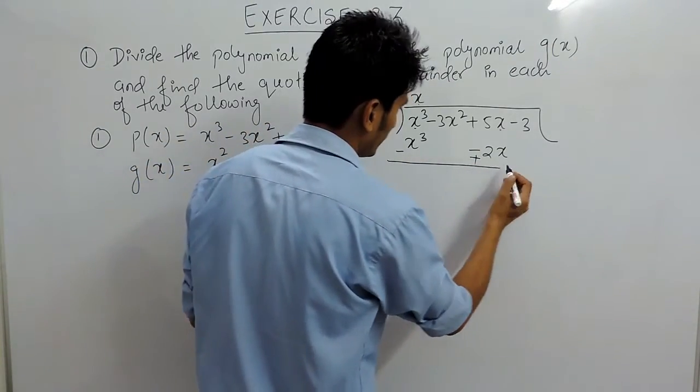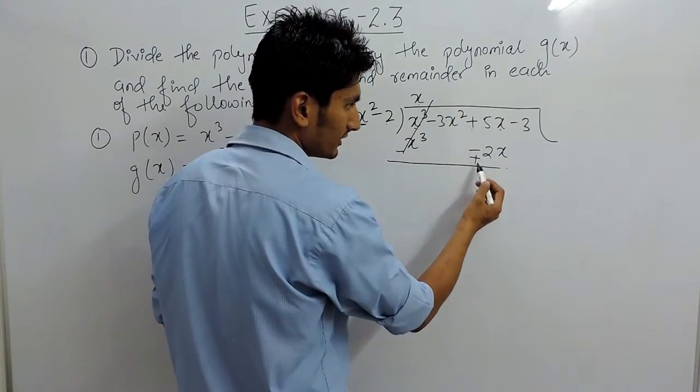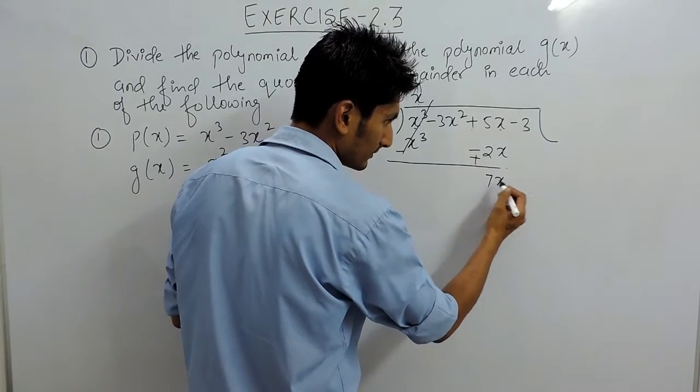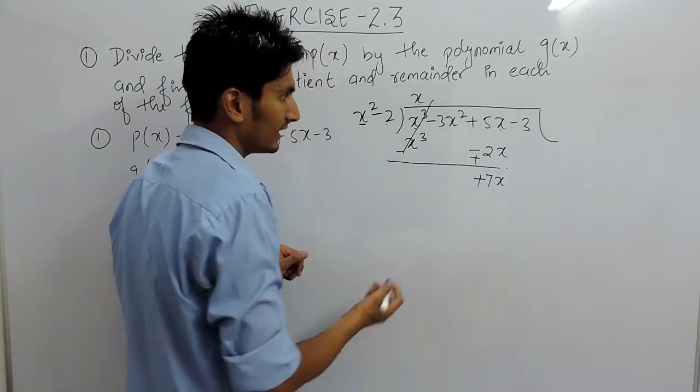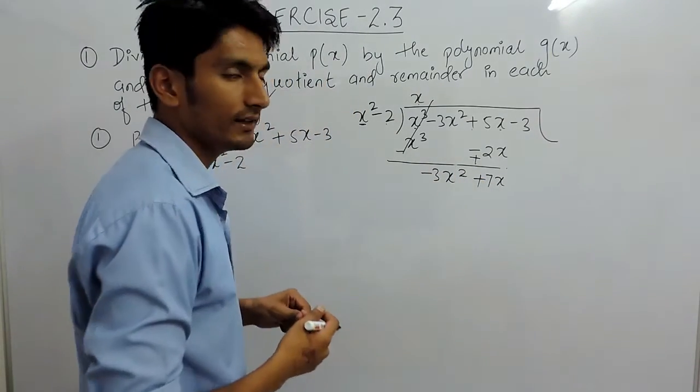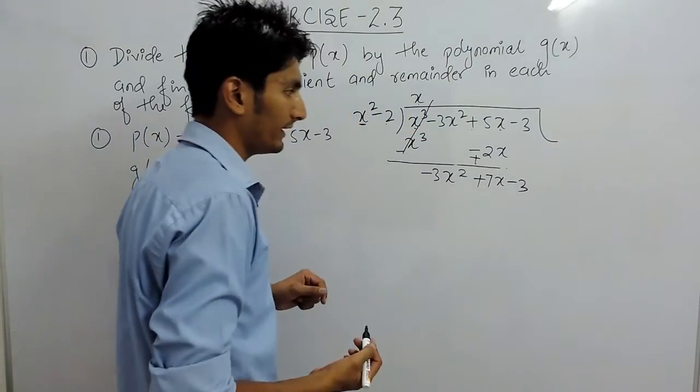After that, this positive and this negative can be cancelled out. This becomes plus 7x, and this minus 3x squared can be copied here, and this minus 3 again can be copied here.